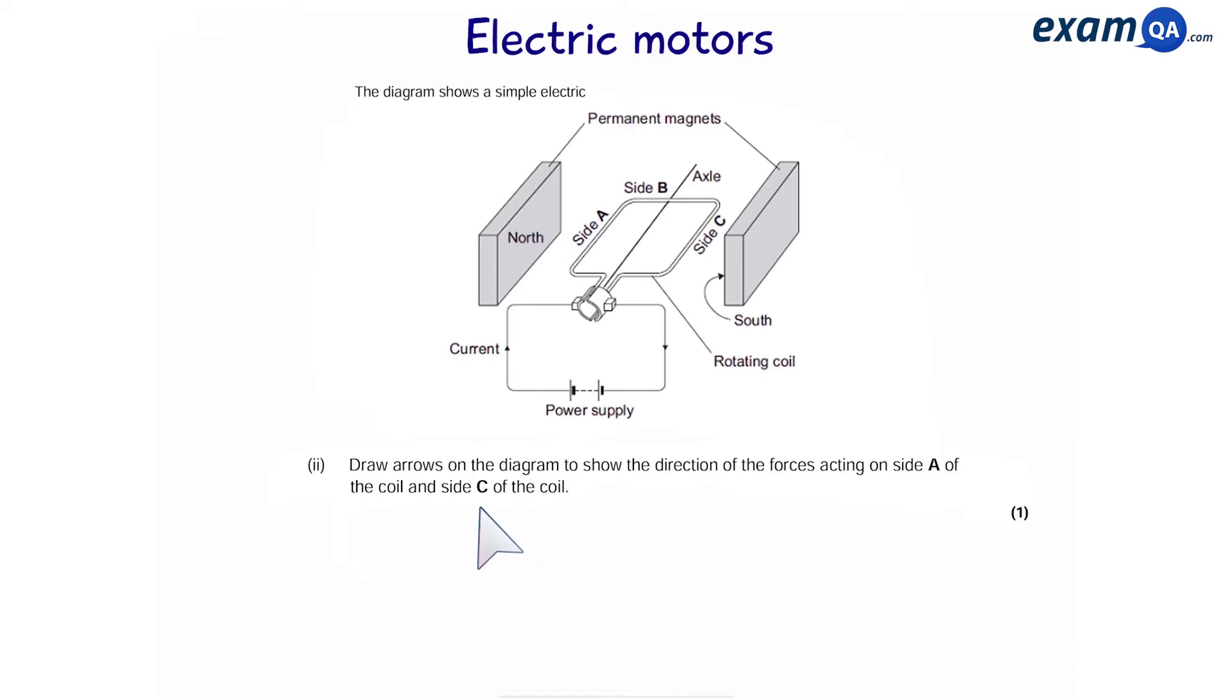Next part. Draw arrows on the diagram to show the direction of the forces acting on side A and C of the coil. First of all, let's look at the direction of the current. The current is moving around the wire and through the coil in this direction.